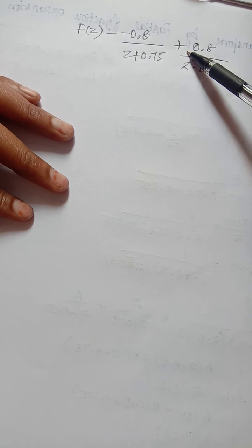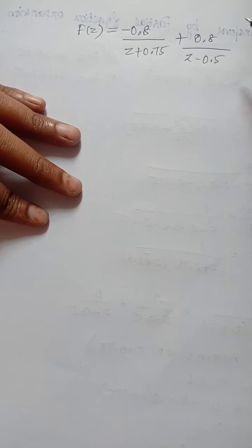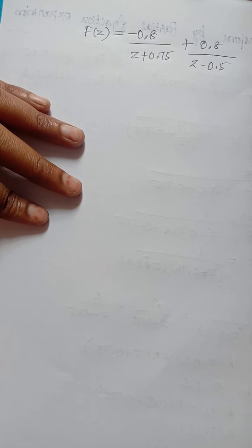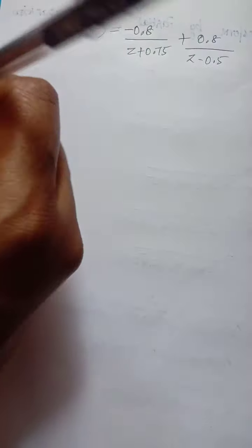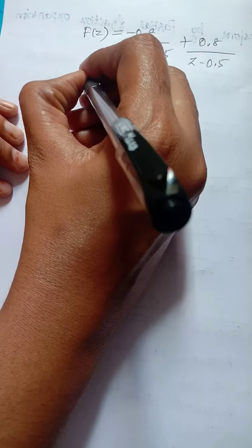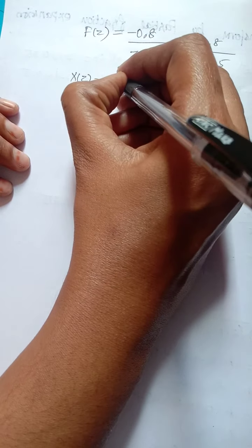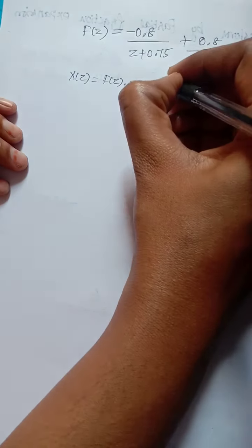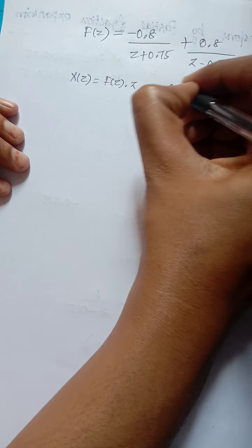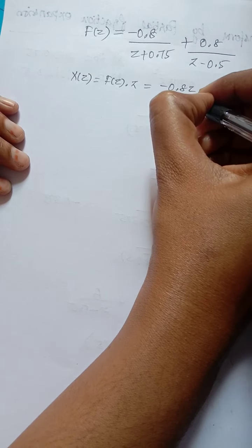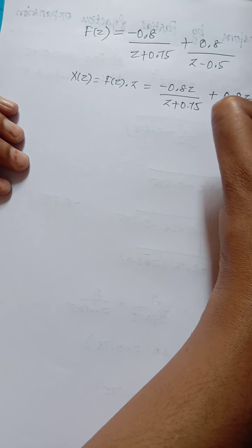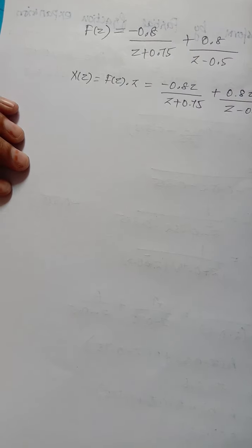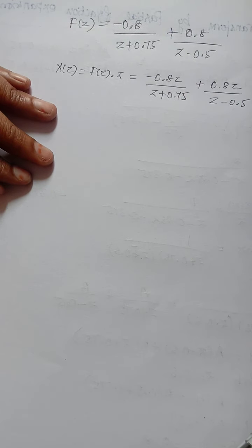So F(z) = −0.8/(z + 0.75) + 0.8/(z − 0.5). Now we write X(z) by multiplying F(z) by z, giving X(z) = −0.8z/(z + 0.75) + 0.8z/(z − 0.5).